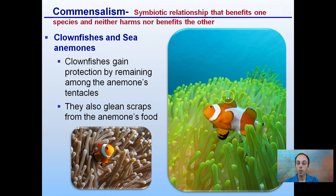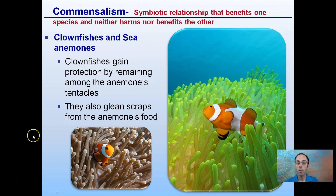The same applies to our sea anemone example. Remember, symbiosis can occur in both aquatic and terrestrial ecosystems, and these are just some examples of symbiosis that does occur.